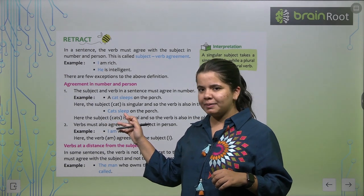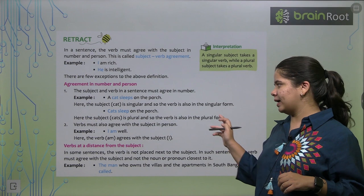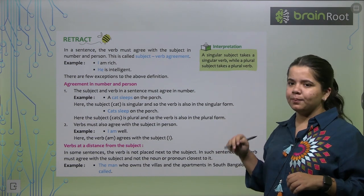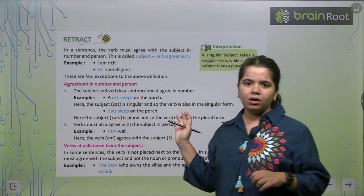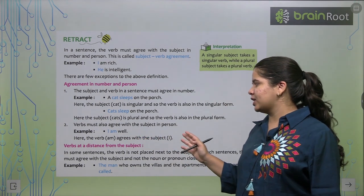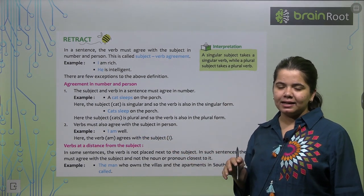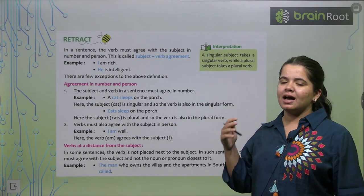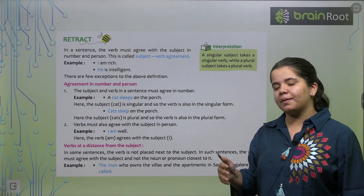Now, for example, cats sleep on the porch. In the first sentence, cat was singular. So, what do we do? Our verb is in singular form. Now, cats sleep on the porch. So, the verb is in plural form.